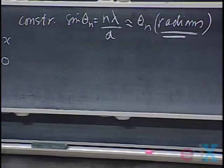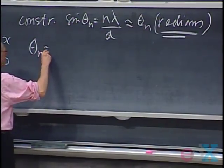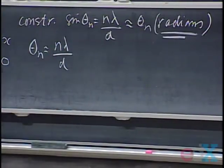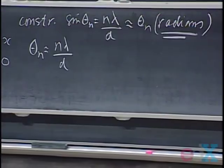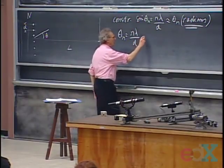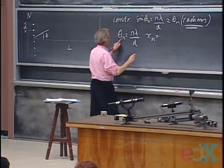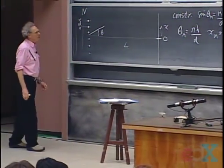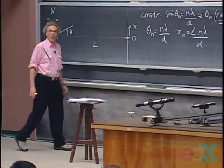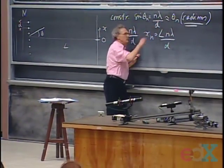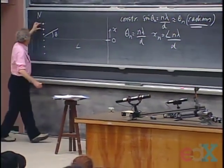For small angles and working in radians, theta of N for the maxima is N lambda divided by D. N equals zero right here, N equals one right here, N equals two right there. To express that in terms of linear displacement from zero, X of N, again for small angles, is L times that number. So you will say: big deal, it's the same result as the double-slit interferometer. We had exactly the same equation, and D is the separation between two sources.